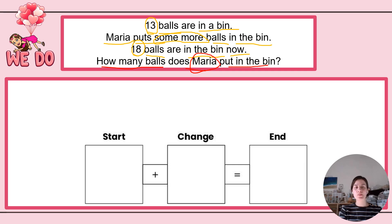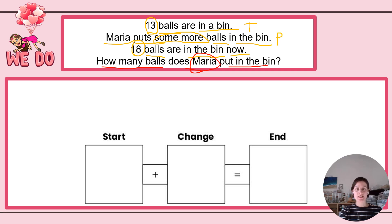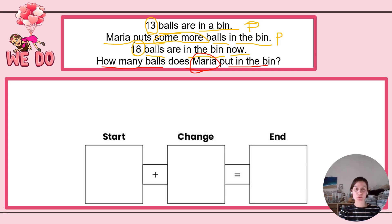Let's go over what we know. We know that we have 13 balls in a bin — that's a part. I know that Maria puts some more balls in the bin, keyword "more," so there's going to be more added. However, I don't know how many — that's my missing part. 18 balls are in the bin now — that's my total. So what am I trying to find out? I'm trying to find out how many balls Maria put in the bin. Let's move on to step two: plan it. I'm using the start-change-end method. Draw this on your board. You can pause this video and press play when you are ready to continue.